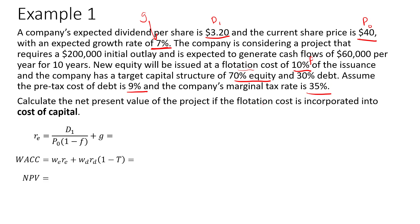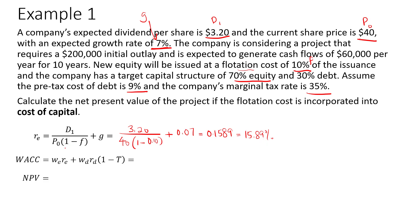Calculate the net present value of the project if the flotation cost is incorporated into the cost of capital — this is approach 1. First, we calculate the cost of external equity: we take the expected dividend of $3.20 and divide it by $40 multiplied by 1 minus 10%, the flotation cost. 10% of $40 means the flotation cost is $4 per share. Adding the expected growth rate of 7% gives 0.1589, so that's 15.89% — the cost of external equity, with flotation cost incorporated.